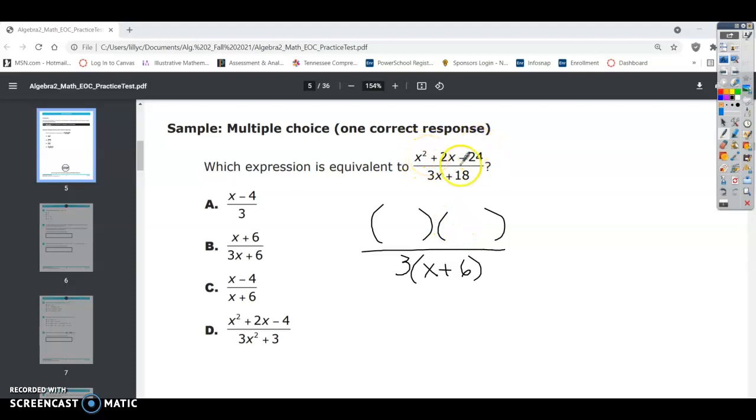So if you remember from factoring, we need something that multiplies to give us x squared. So we're going to have x times x and we need something that multiplies to give us negative 24 and at the same time adds to give us plus 2. So what multiplies to give us 24? We got 1 and 24, 2 and 12, 3 and 8, 4 and 6.